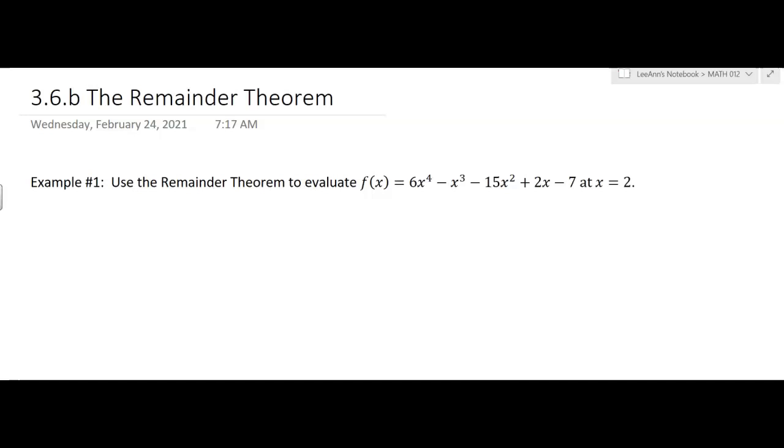It wants us to use the remainder theorem that we just talked about and evaluate this particular function at x equals 2. So 2 is the k that we're using and so we're trying to find f of 2, and it's equal to a linear factor x minus 2 times some quotient. We don't know what that quotient is. We could figure that out by the division plus the remainder, and then what we're interested in is what is that remainder.